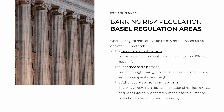Operational risk regulatory capital can be estimated using one of three methods. The first is the basic indicator approach: it's simply a percentage of the bank's total gross income. Under Basel III it's 15%. So if the bank has earned $100 billion in gross income, the regulatory capital for this risk is $15 billion — simple, but very high.